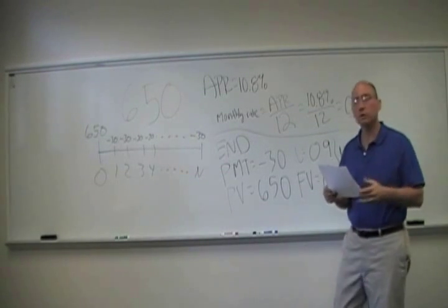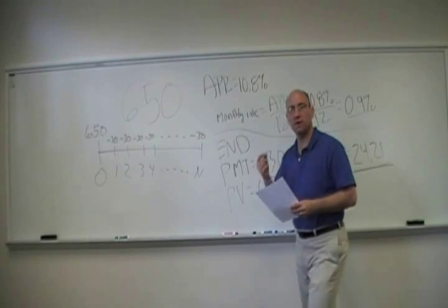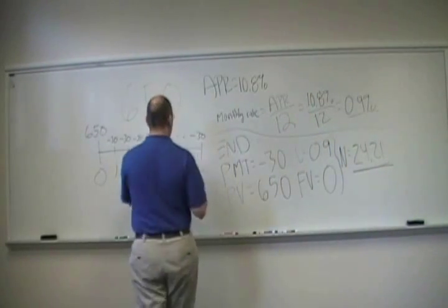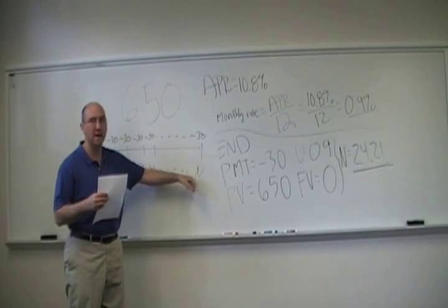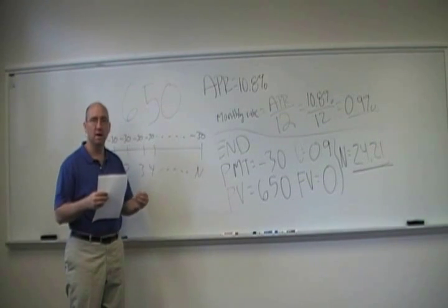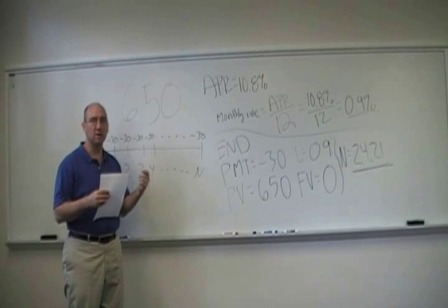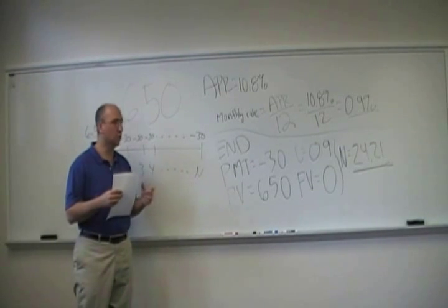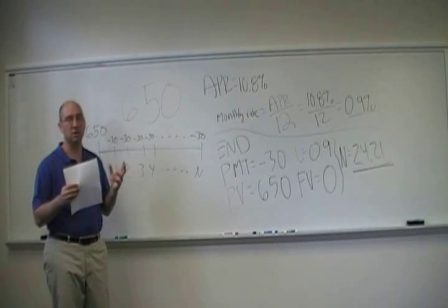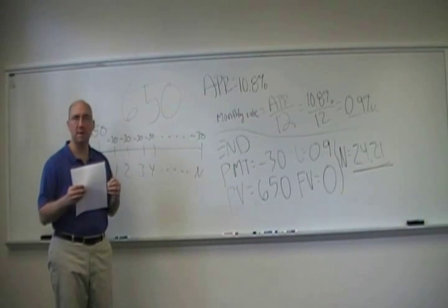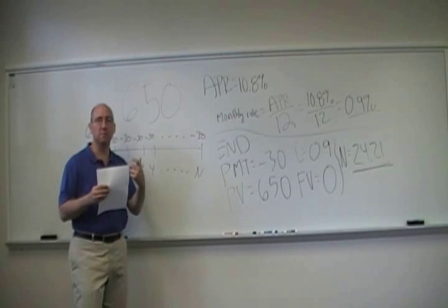So it will take about two years but again, we focus on the number of payments. Notice the timeline indicates it as discrete, N has to be discrete, a whole number. It doesn't necessarily have to, you can interpret 0.21 as the last payment being a fraction of the normal $30 payments. That's where you focus on the number of payments.